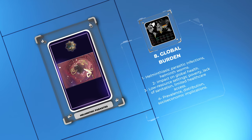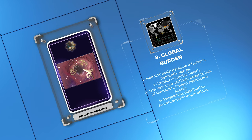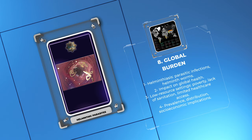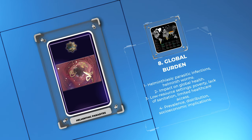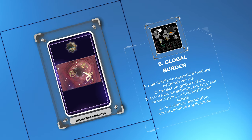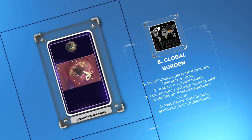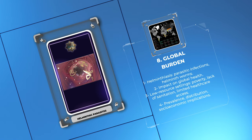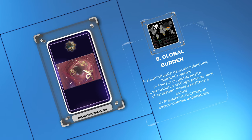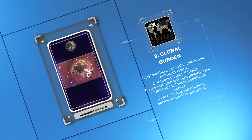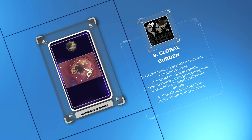Helminthiasis, a group of parasitic infections caused by helminth worms, has a profound impact on global health, especially in low-resource settings. Factors like poverty, lack of sanitation, and limited healthcare access contribute to its persistence in developing nations. Understanding its prevalence, distribution, and socio-economic implications is crucial for addressing its burden.